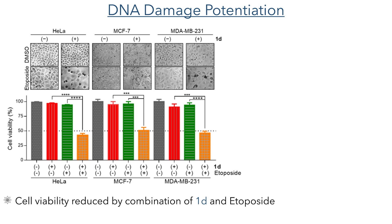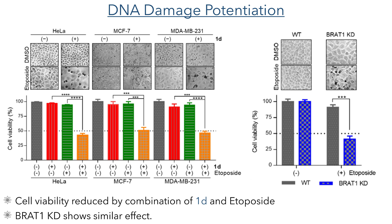Finally, to prove that this effect can occur in the cell, the authors carried out cell viability studies assessing the combination of 1D and etoposide. In all three cancer cell lines studied, this combination showed a drastic reduction in cell viability. This is further confirmed by the results of the BRAT1 knockdown, which showed a similar reduction in cell viability to cells administered with compound 1D.